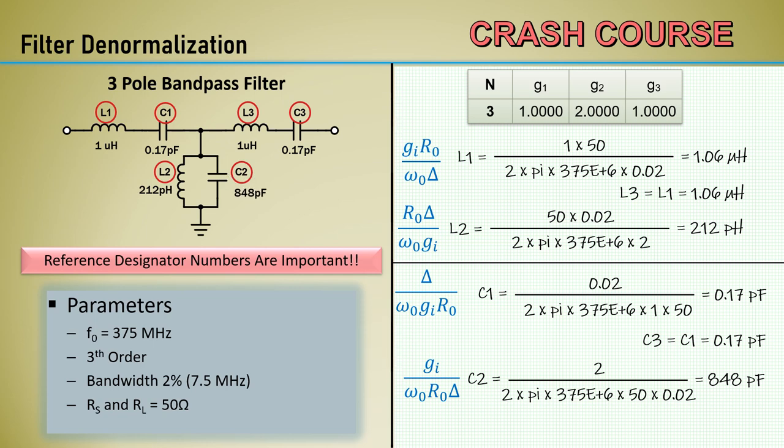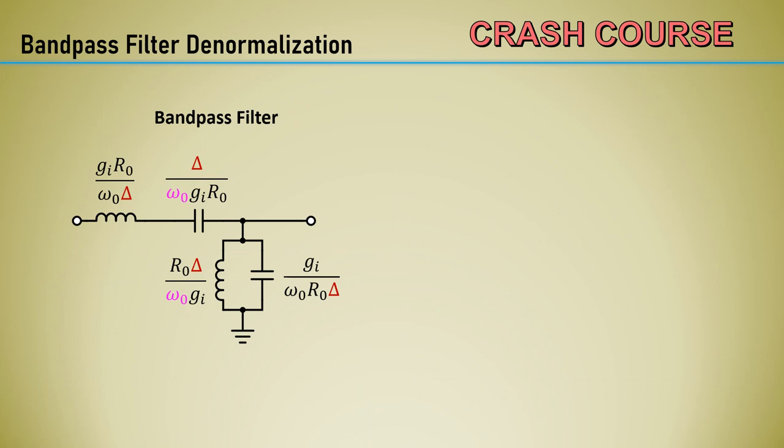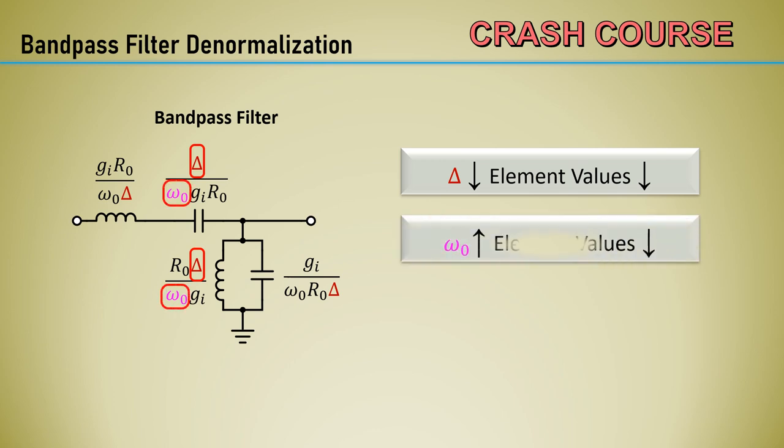This is a fun theoretical exercise but some problems exist. Look at the value of L2. I doubt you can buy an inductor that low and the interconnect inductance would also impact the total inductance of the circuit. Also look at C1 and C3 these are very low values and would also be thrown off by parasitics. Let's look at the denormalization equations again. Where we get into trouble is when the bandwidth delta is small and in the numerator. As delta goes down the element values go down. As omega naught the center frequency goes up this also brings the element values down. I think this helps to explain one way in which the lumped element filters are limited in frequency and bandwidth.